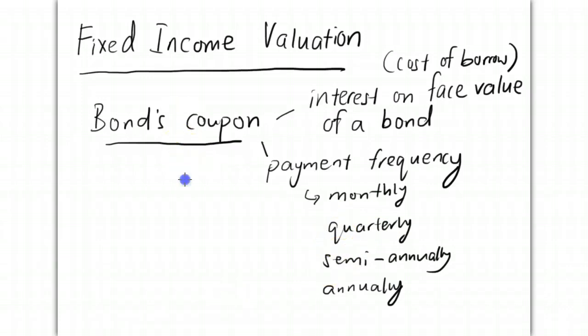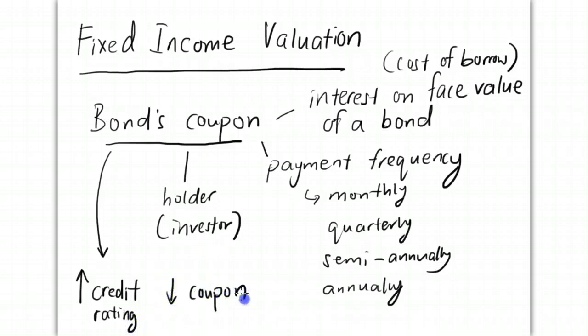The bond's coupon to the bondholder—the investor who buys or holds the bond—represents the return on the investment. Regarding a bond's coupon, the higher the credit rating of a company, the lower the coupon of the bond, since the company has proved itself less risky.